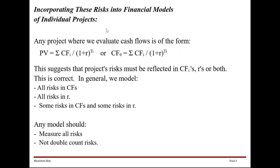Then we looked at incorporating these risks into financial models of individual projects, and we realized that typically we're going to be evaluating our projects with discounting equations. We have a bunch of future cash flows that we individually, one at a time, discount back to t=0 by dividing them by (1+r) to the t_i, where t_i is the time of that cash flow. All four risks have to be incorporated into either the cash flows or the discount rate or both — with the exception of duration risk, because that's built directly into the math of this equation.